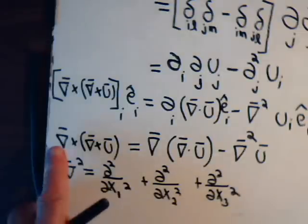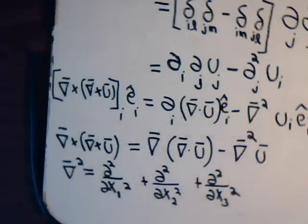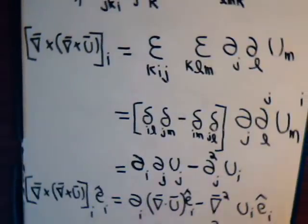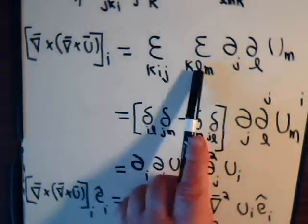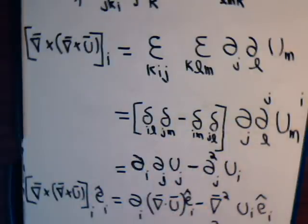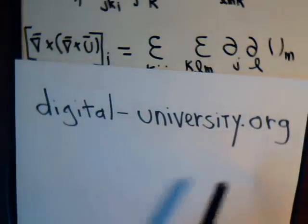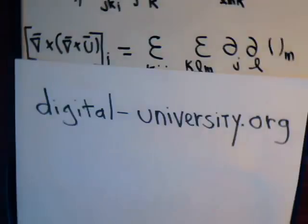Anyway, this right here is the identity that we wanted to prove. And again, we did that along the way using the epsilon delta identity. Okay, I think this is video 16 in our series, the super powerful vector identity technique. The playlist for this series and all of the videos is at the website digital-university.org.